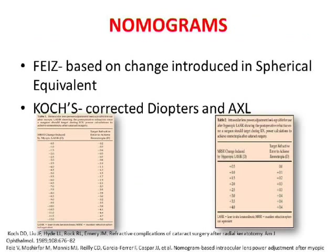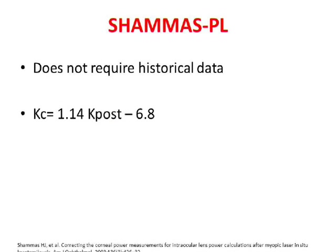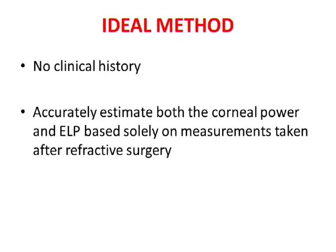There are also multiple nomograms. The Feiz-Mannis nomogram is one I already use. There is also a Cox nomogram in which, if you have no previous data, you feed in your current K values and current axial length — it gives you an IOL power, and you use the approximate change in refraction to adjust the nomogram accordingly. The Shammas PHL formula deserves special mention because it does not require any historical data; it derives K values accordingly. The ideal method would require no clinical history and measure everything as of today, but we do have calculators to help bridge that gap.